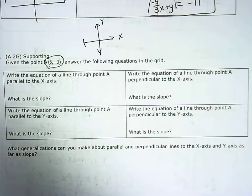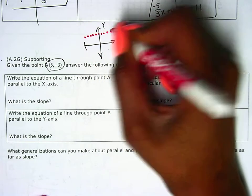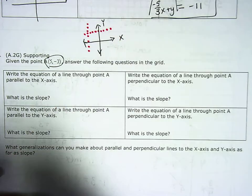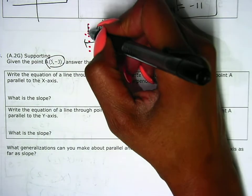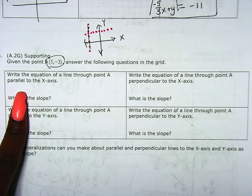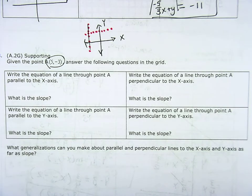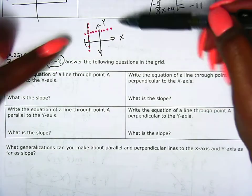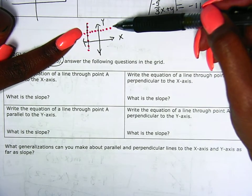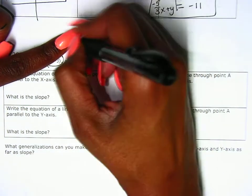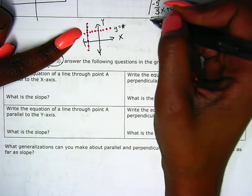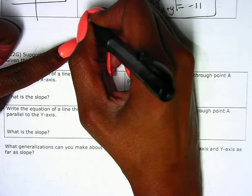I'm going to draw a couple lines and connect those sides. Anytime a line is horizontal, it has the equation y equals a number. So anytime a line is vertical, it has the equation x equals a number.